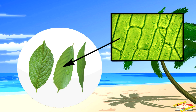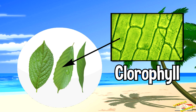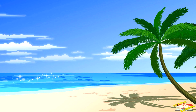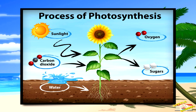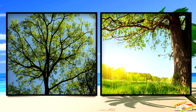Leaves are green because they contain chlorophyll. Chlorophyll is a special pigment that helps plants make food from sunlight through a process called photosynthesis. During spring and summer, trees get lots of sunlight, so their leaves stay green and full of energy.